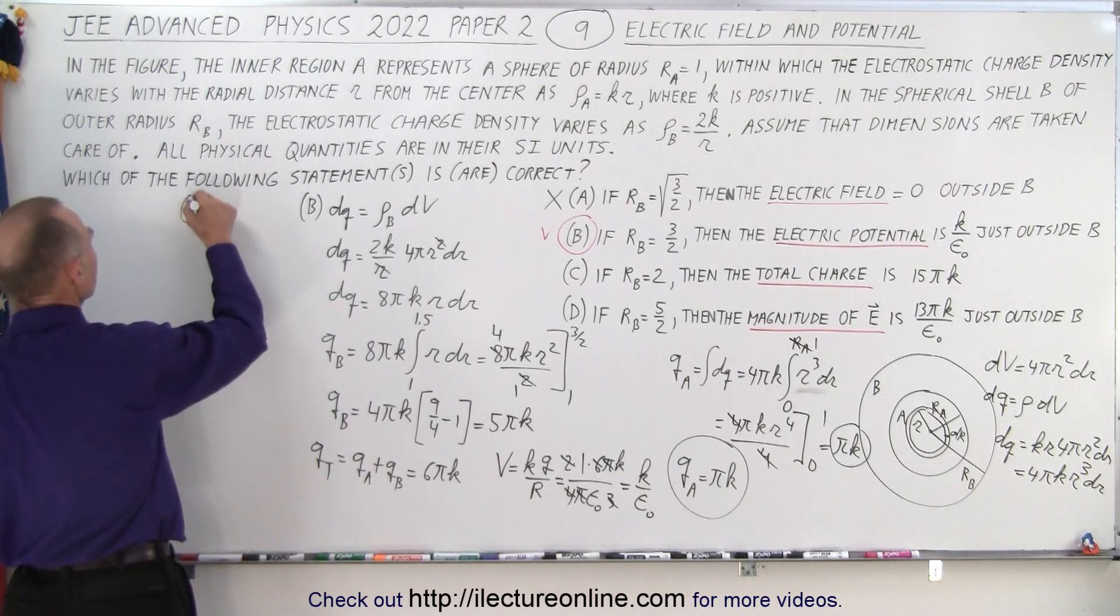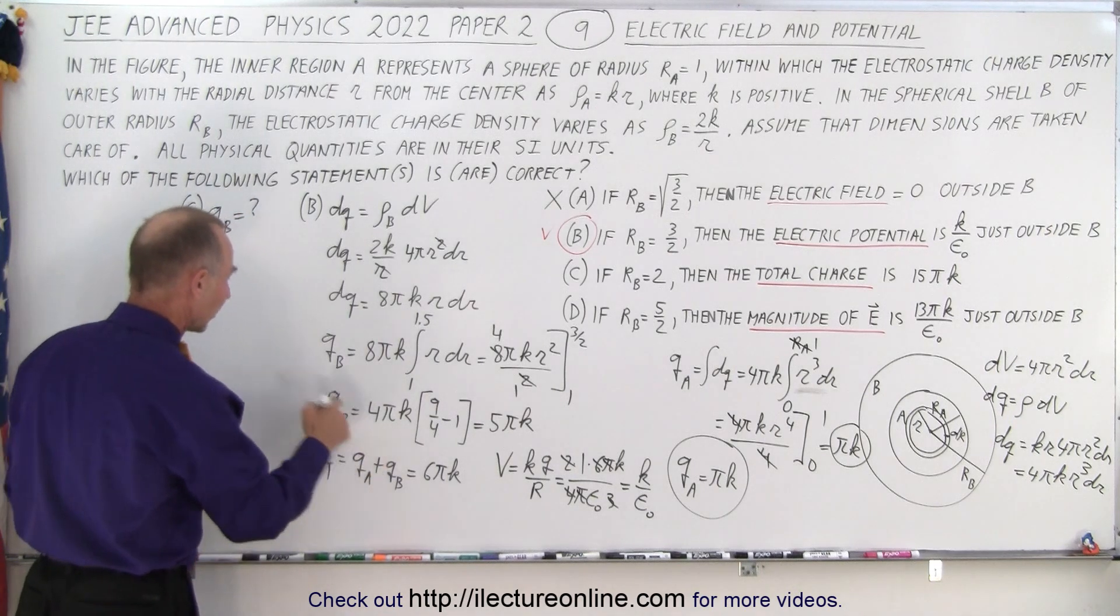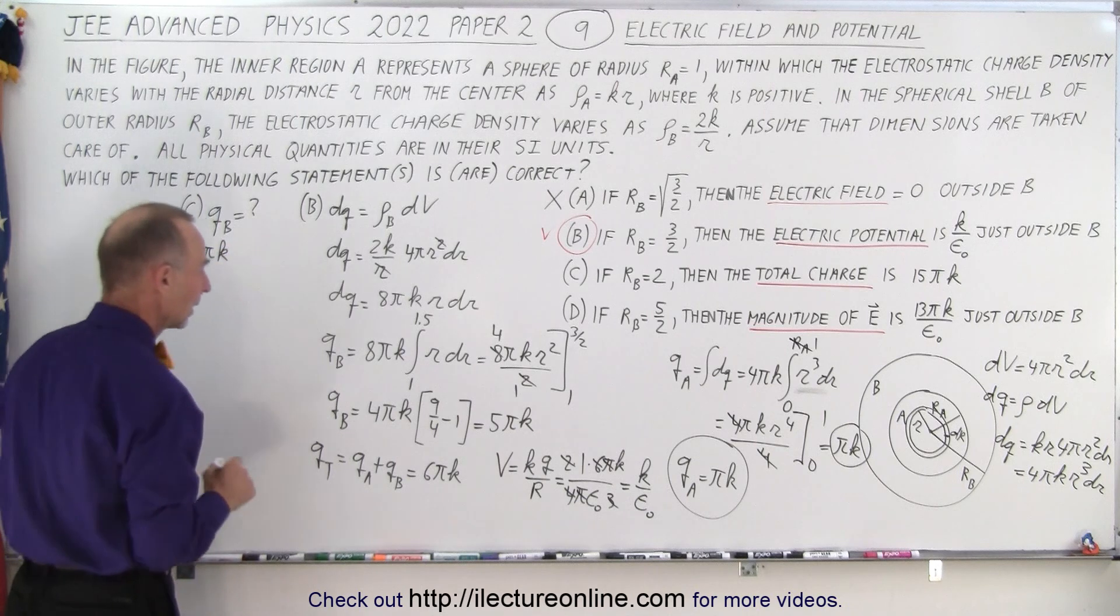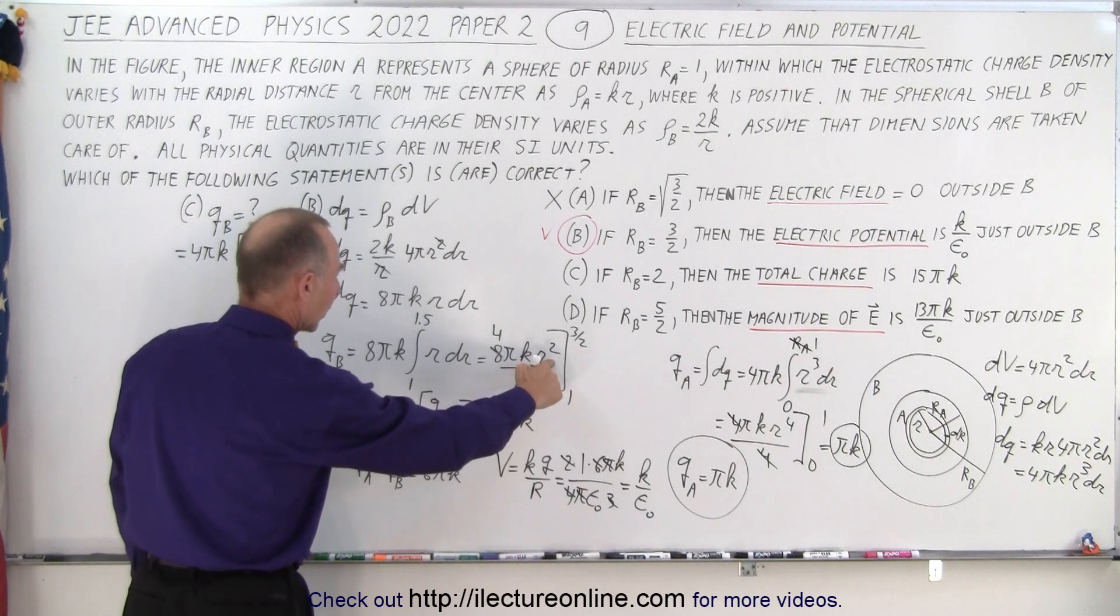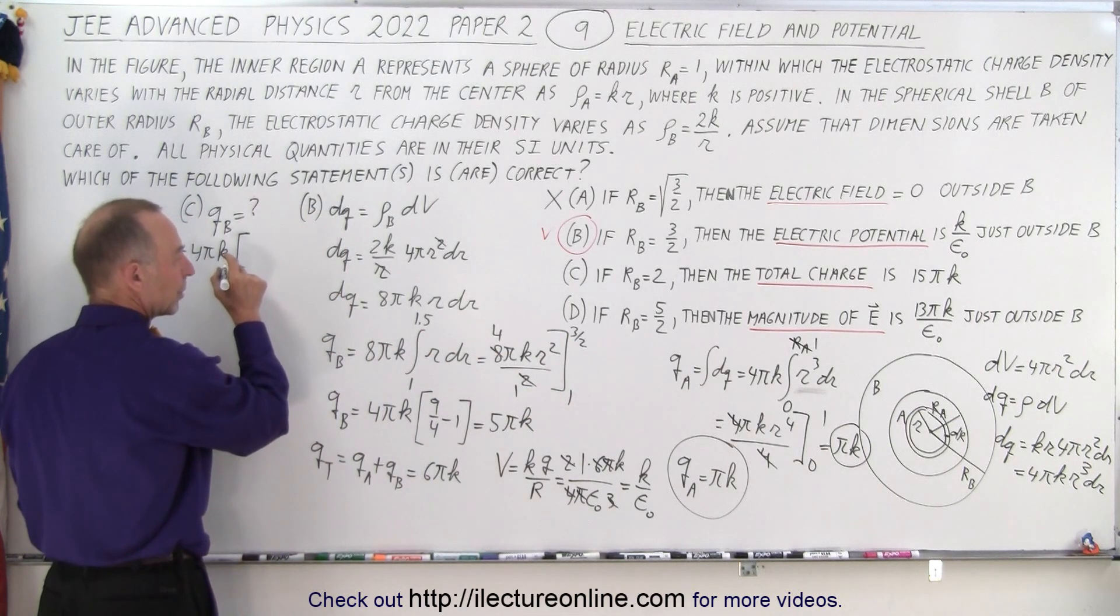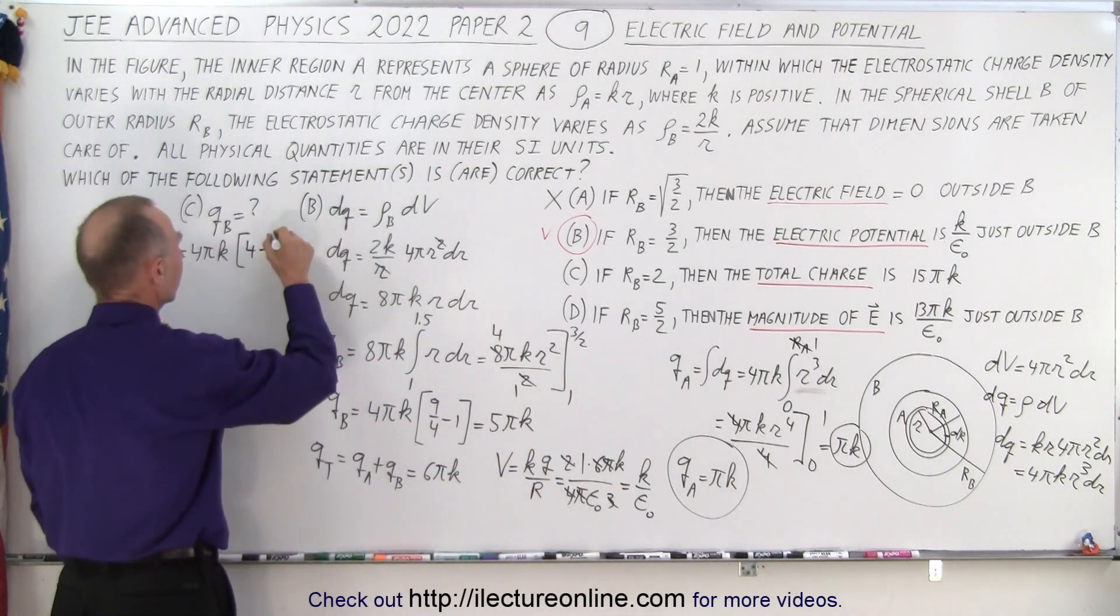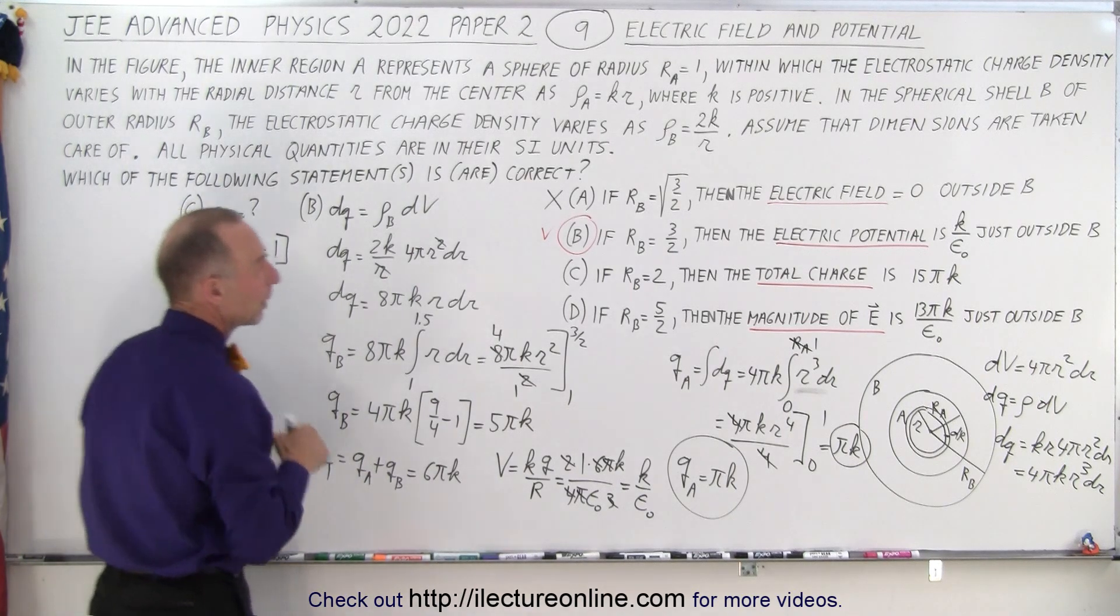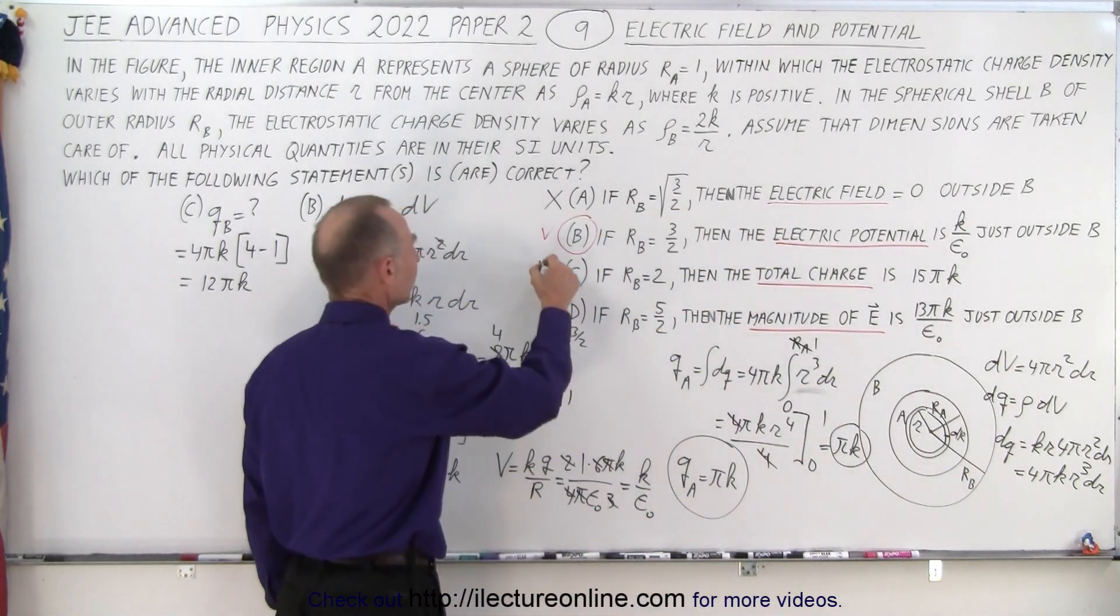So for part C, qB is equal to question mark. And so now what we do is that's equal to 4 pi k times r squared evaluated at 2. That would be r squared, that would be 4, minus evaluated at 1, which is 1. So that would be 12 pi k, and is this 12 pi k what they're looking for? No, they're looking for 15 pi k, so we realize that that is not the right answer.